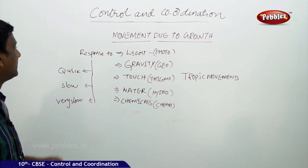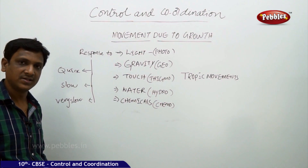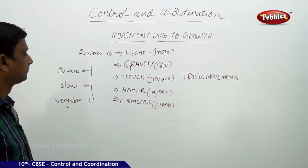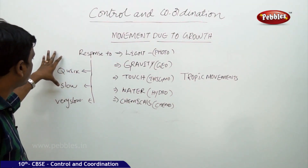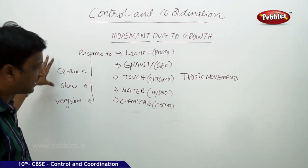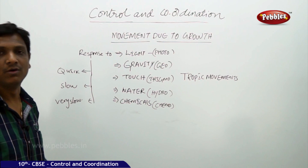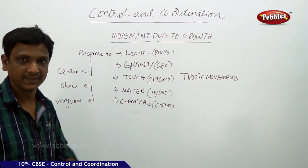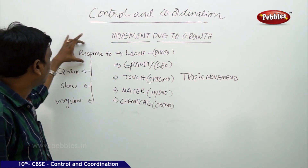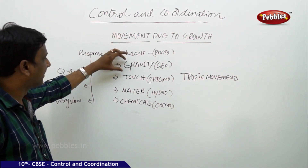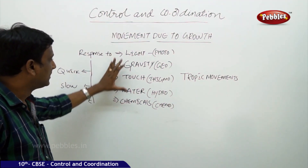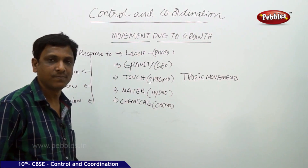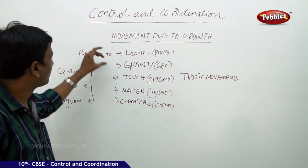Let us see the different kinds of movements that are produced in plants and how these movements are produced. Movement due to growth — the responses are of different types. Some responses in plants are very quick, some are slow, and some are very slow, even though they are a response to a stimulus. The responses to different stimuli like light, gravity, touch, water, and chemicals are called tropic movements, which are observed in plants.